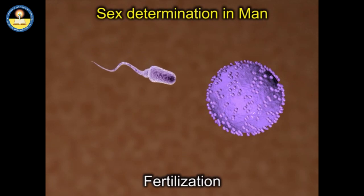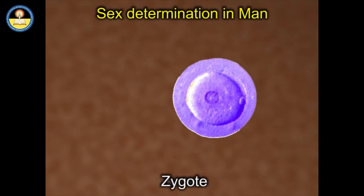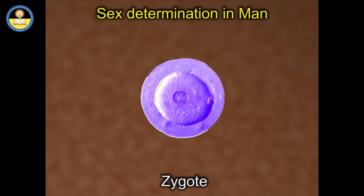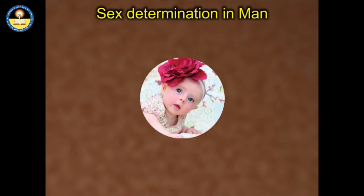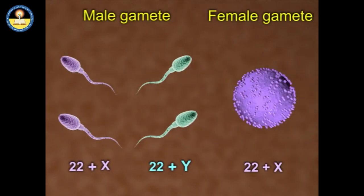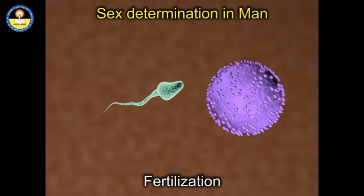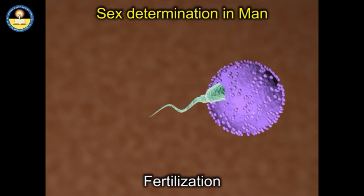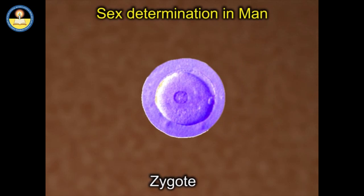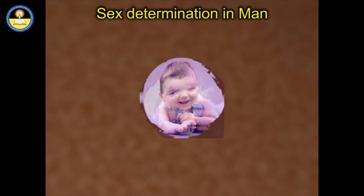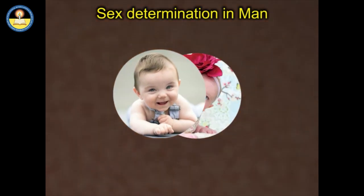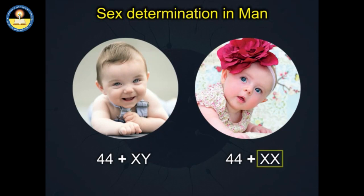During fertilization, if a sperm containing an X chromosome fuses with the ovum to produce the zygote, the embryo will develop into a female baby. If the sperm containing a Y chromosome fuses with the ovum to produce the zygote, the embryo will develop into a male baby. So, if it is an XX chromosome combination, it will be a girl, and if it is XY, it will be a boy.